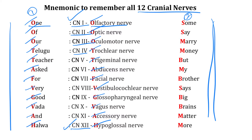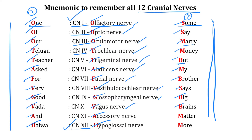The second mnemonic goes like this: Some say merry money, some say merry money, but my brother says big brains matter more. Again, the first letter of each word corresponds to the type of nerve. So olfactory nerve is sensory, optic nerve is sensory, oculomotor is motor, trochlear is motor, trigeminal is both sensory and motor, abducens is motor, facial nerve is both sensory and motor, vestibulocochlear nerve is sensory, glossopharyngeal is both sensory and motor, vagus is both sensory and motor, accessory nerve is motor, and hypoglossal nerve is also motor.